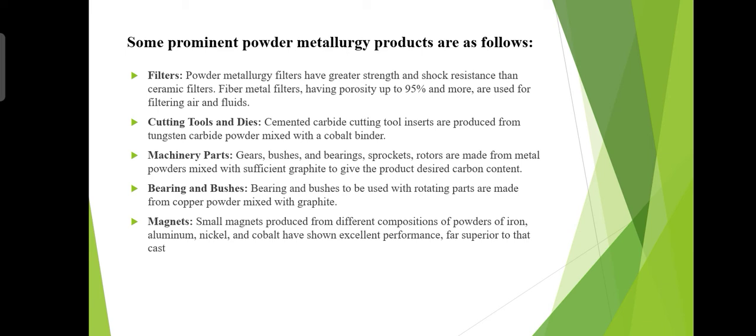When machine parts are made, graphite is added so that the appropriate carbon percentage is maintained in the product. For making bearings and bushes using powder metallurgy, copper powder is also mixed along with graphite.